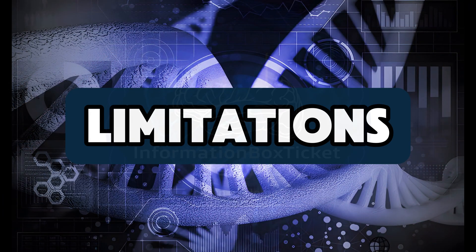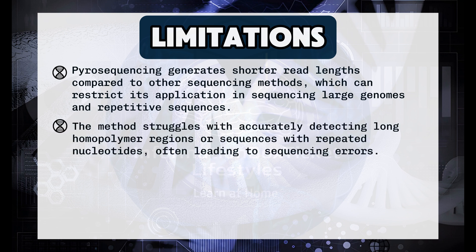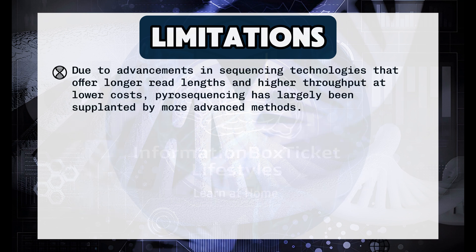Pyrosequencing generates shorter read lengths compared to other sequencing methods, which can restrict its application in sequencing large genomes and repetitive sequences. The method struggles with accurately detecting long homopolymer regions, often leading to sequencing errors. While less expensive than some NGS methods, the cost per base pair is higher compared to other high-throughput techniques. Due to advancements in sequencing technologies offering longer read lengths and higher throughput at lower costs, pyrosequencing has largely been supplanted by more advanced methods.